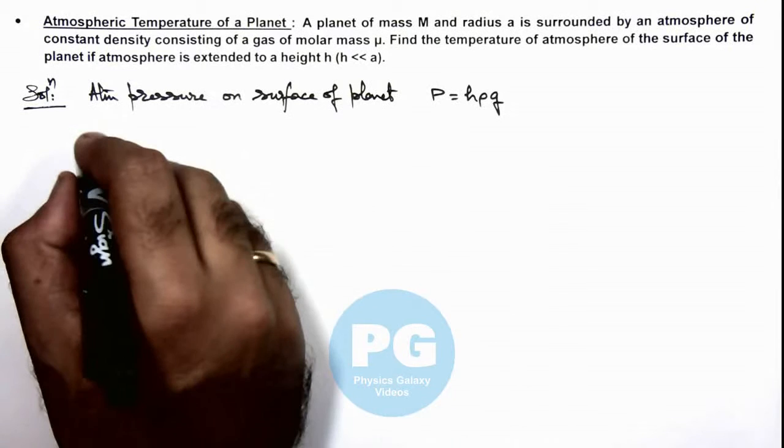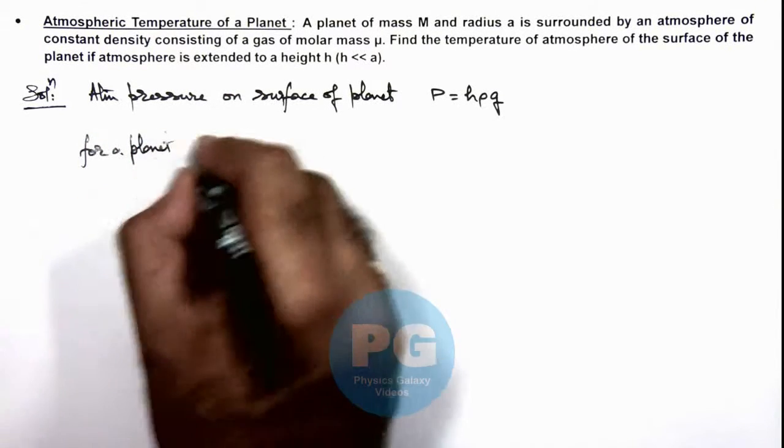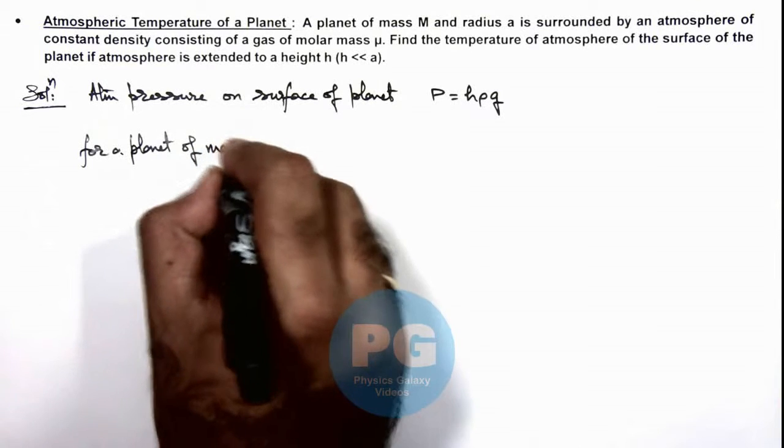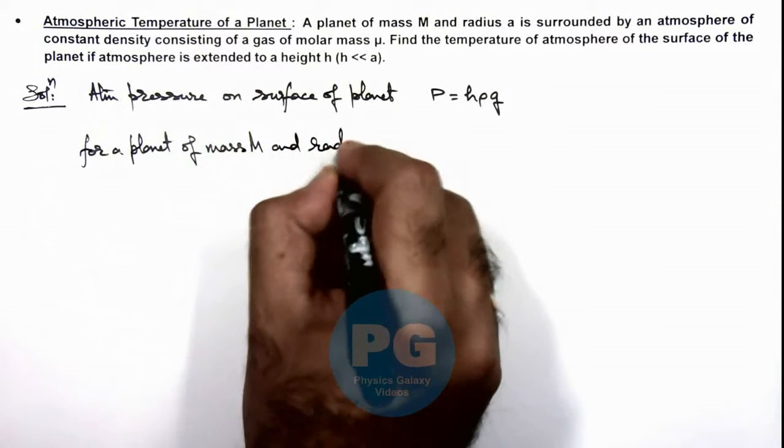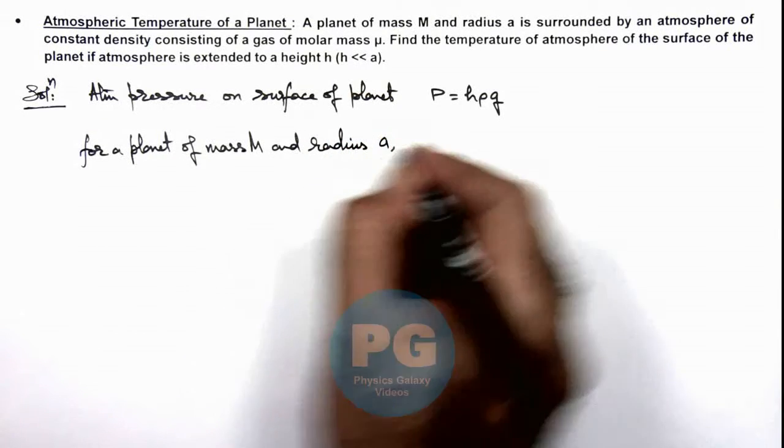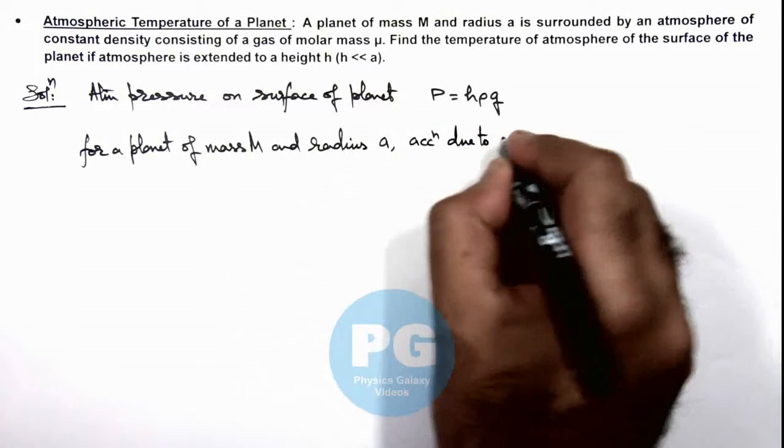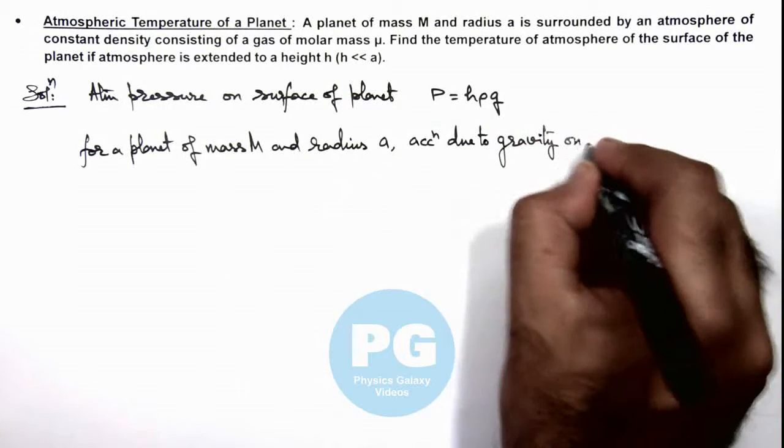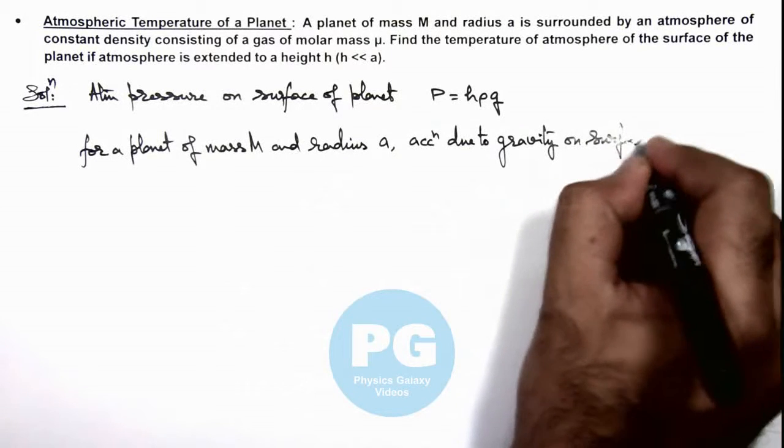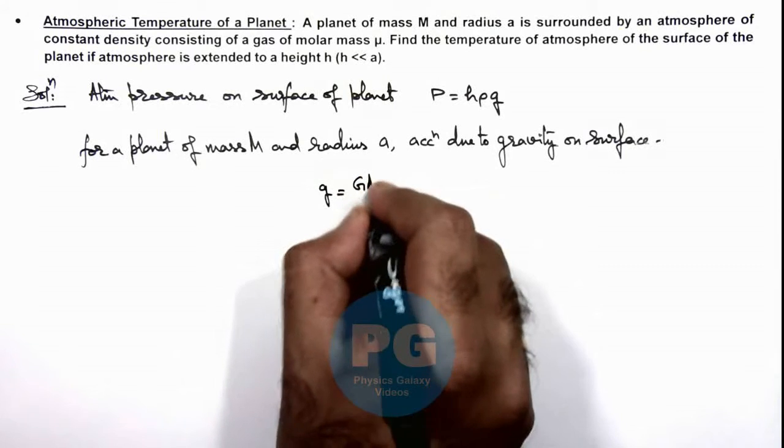And for a planet of mass M and radius a, acceleration due to gravity on surface is given as g = GM/a².